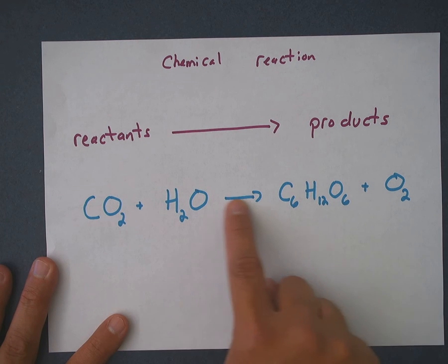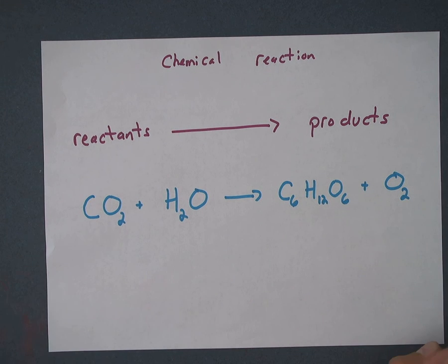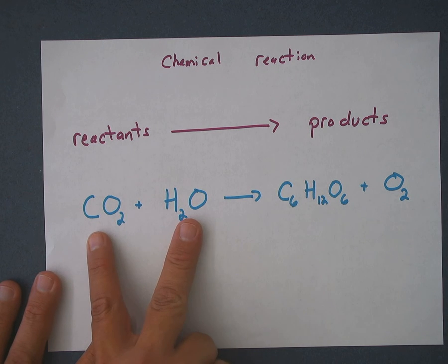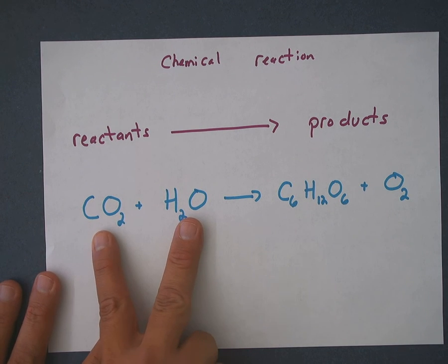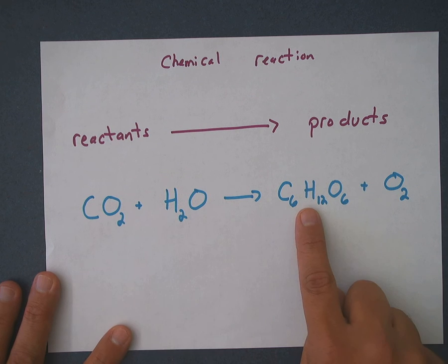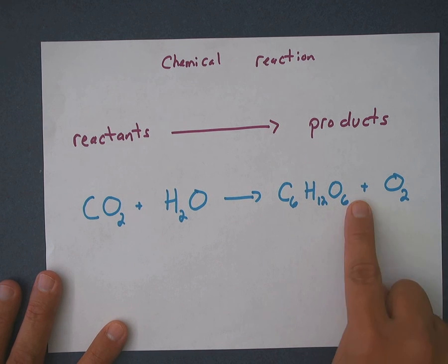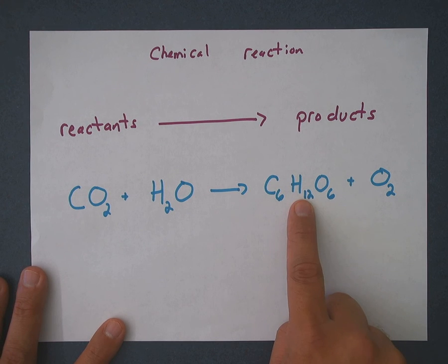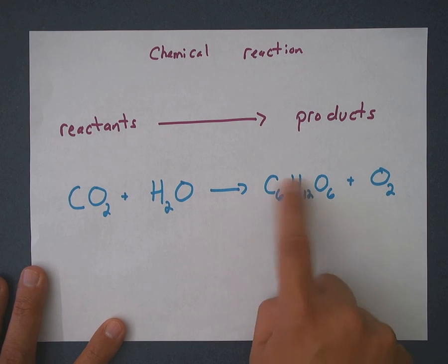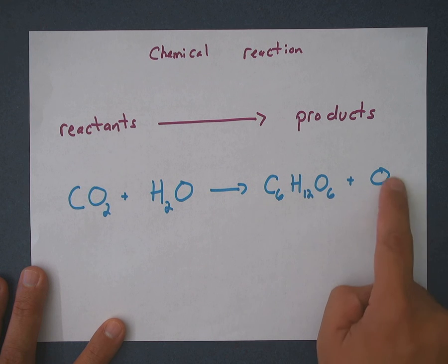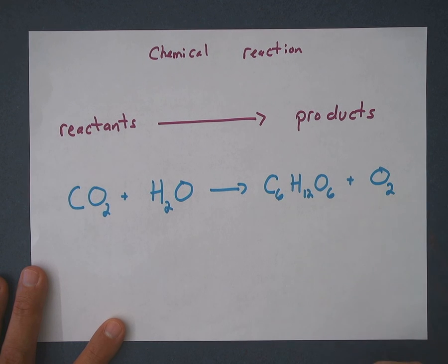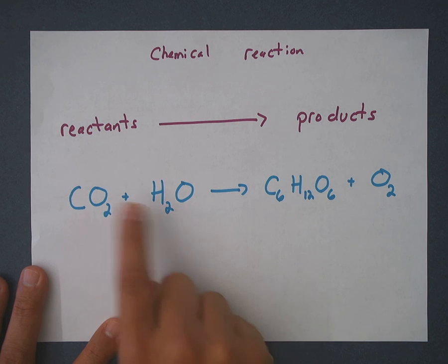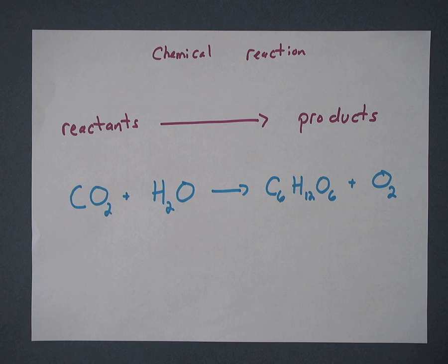This is a very famous chemical reaction called photosynthesis. Carbon dioxide and water, through the power of plants and energy from the sun, turn into glucose — a sugar — and oxygen. If I asked you: is glucose a product or a reactant? It's after the arrow, so glucose would be a product. So would oxygen. Carbon dioxide molecules and water molecules would be part of the reactants.